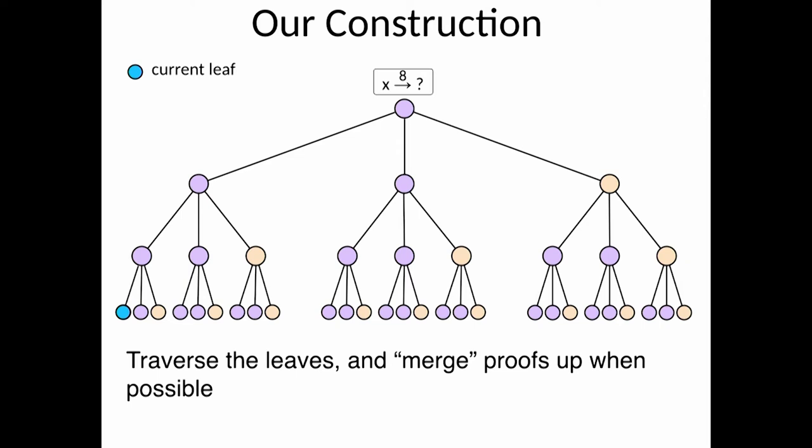So this is how it works. You start at the beginning. You compute the proof for the first step, that from x you went to x squared. It's a trivial proof. And then from x squared to x to the 4. And then you prove that from x you went to x to the 4. And you can forget the first two proofs that you had. So you can just merge up and remember only the last proof.